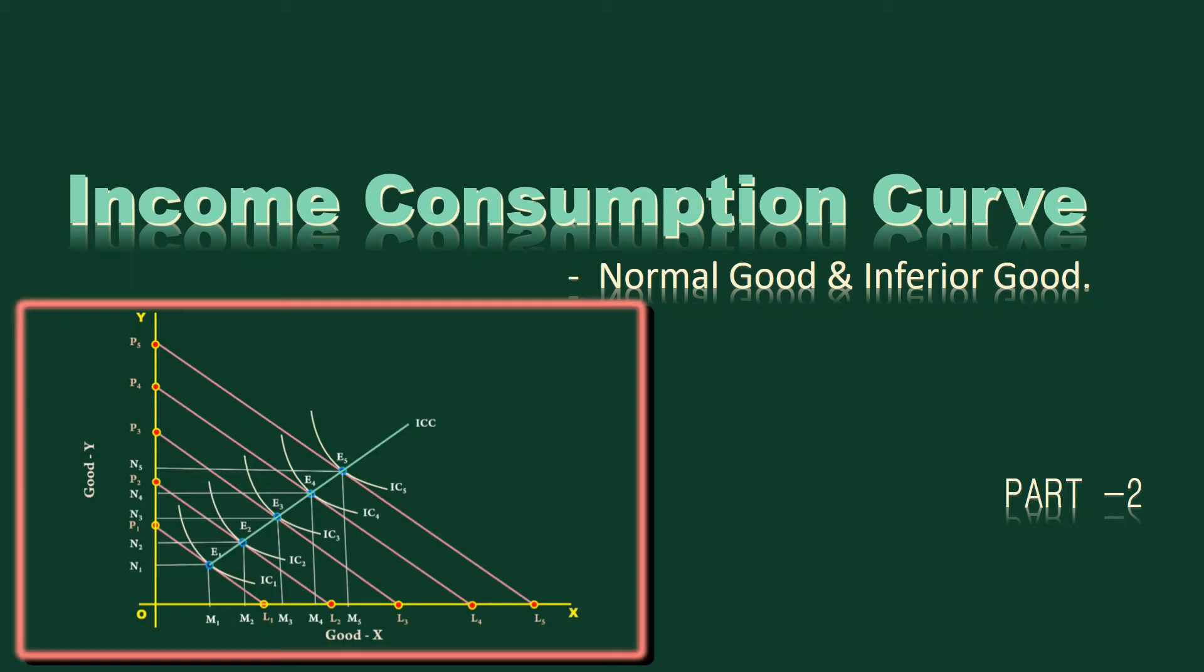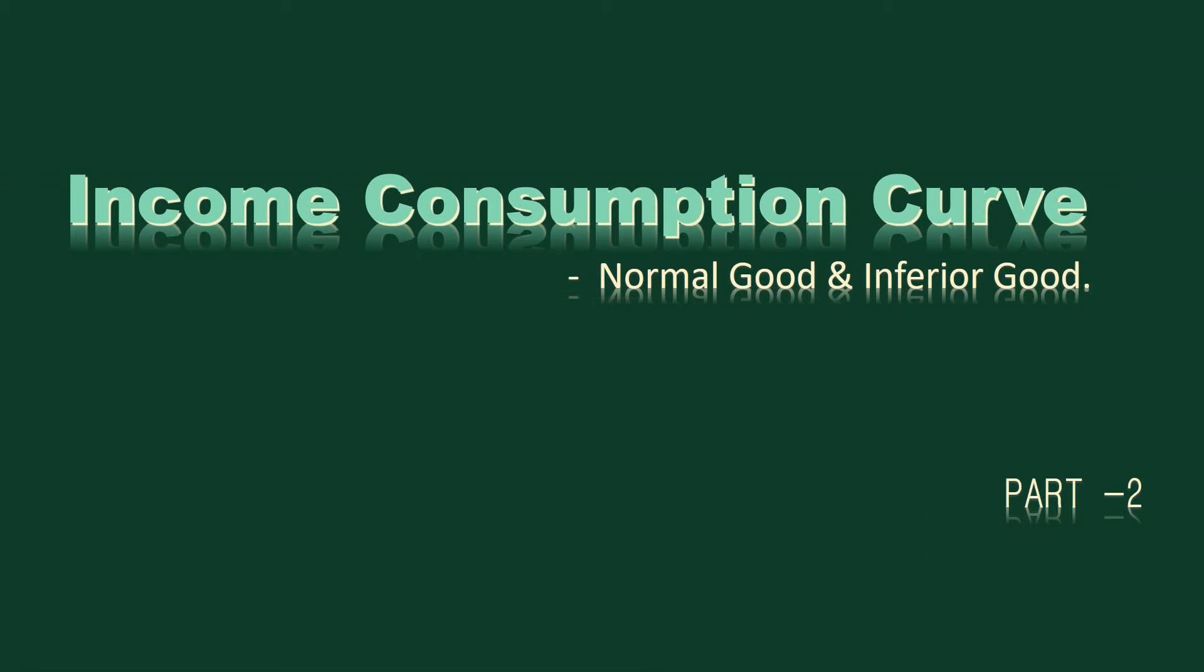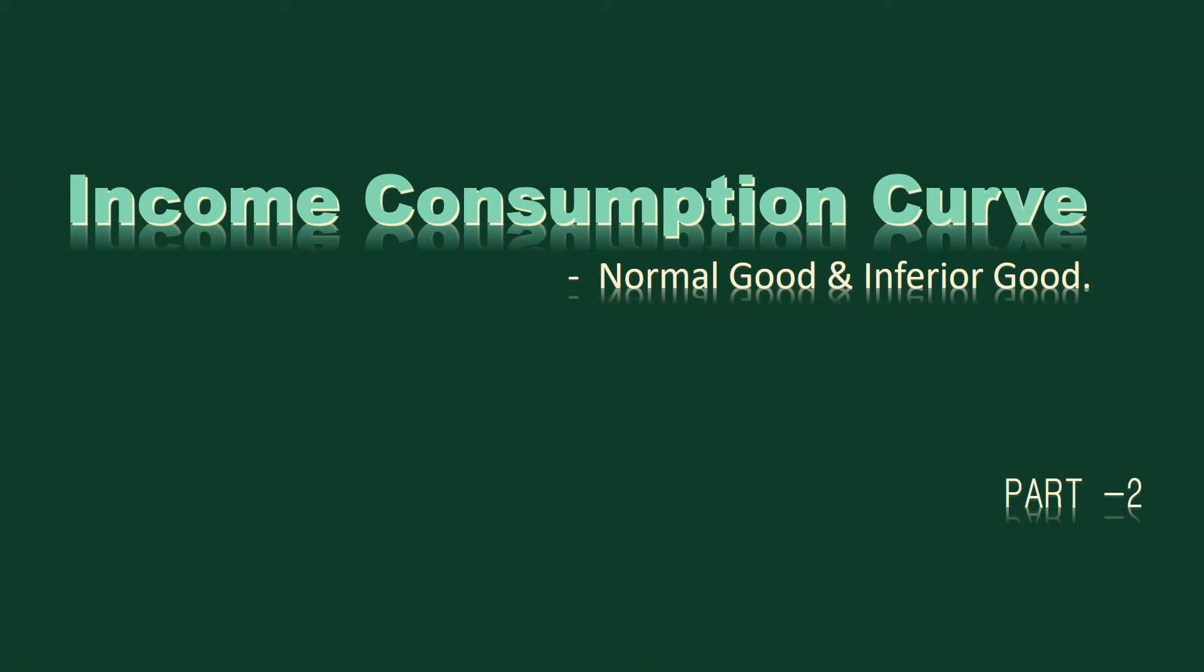My previous video ends like this. In our diagram, income consumption curve is sloping upwards. This normally is the case. We shall start from where we finished.